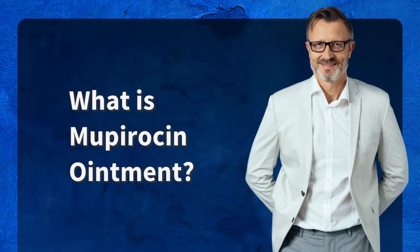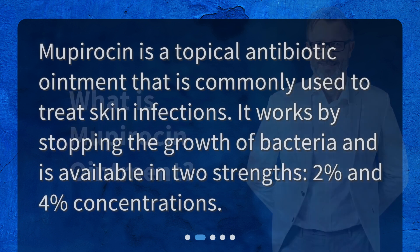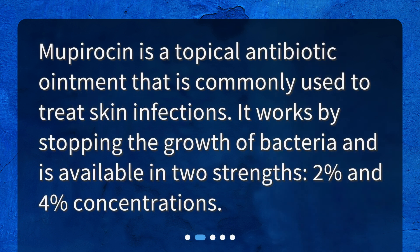What is Mupirocin Ointment? Mupirocin is a topical antibiotic ointment that is commonly used to treat skin infections. It works by stopping the growth of bacteria and is available in two strengths: 2% and 4% concentrations.